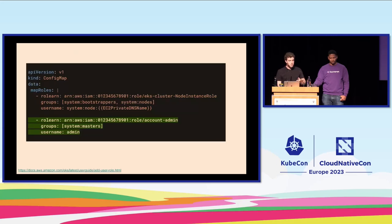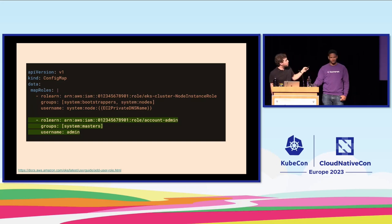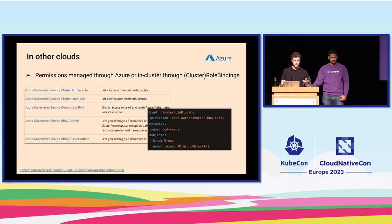So now we want to give Kate admin access to our cluster. Even though she's an admin to our AWS account, we need to explicitly map her identity. We say: if you are an account admin in AWS, you should also be a system master in Kubernetes. And now she has the right access and she can start to work.